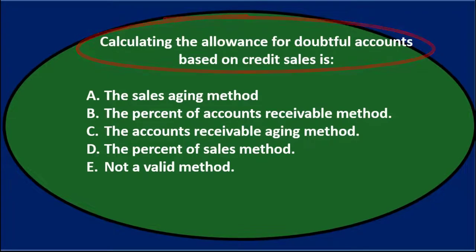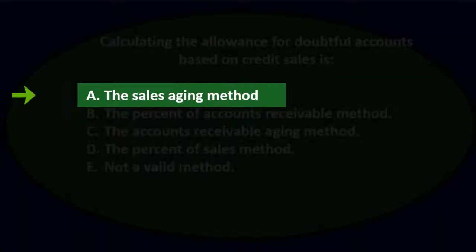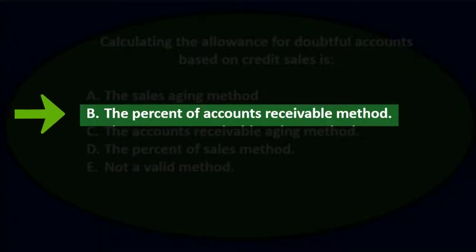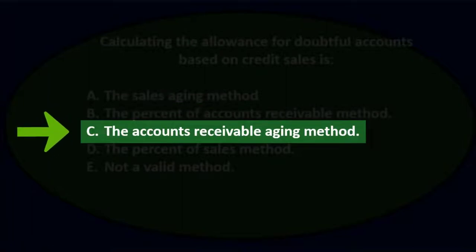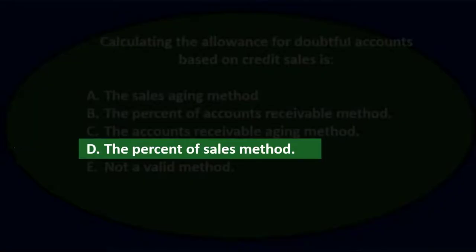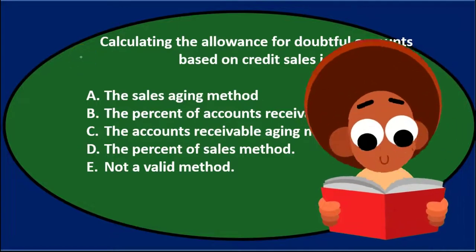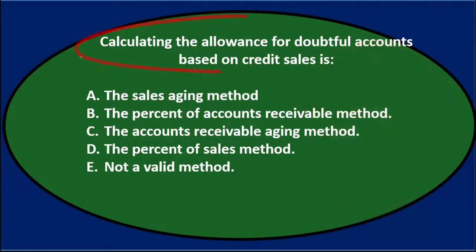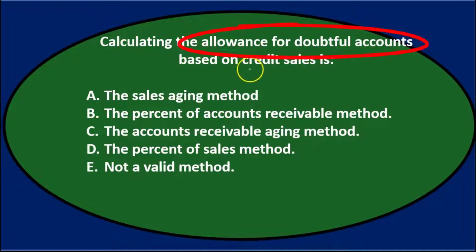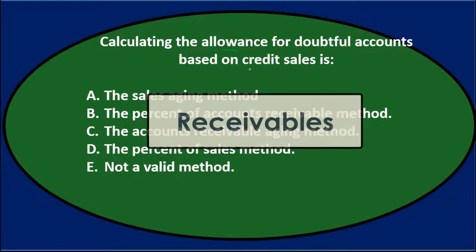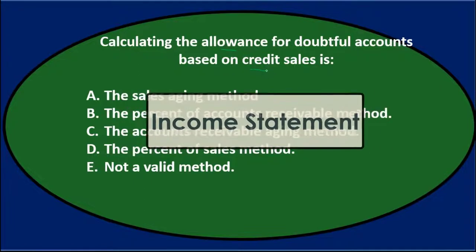Calculating the allowance for doubtful accounts based on credit sales is: a) the sales aging method, b) the percentage of accounts receivable method, c) the accounts receivable aging method, d) the percent of sales method, or e) not a valid method. This time we're concentrating not on the receivable side but on the sales side — the income statement side.